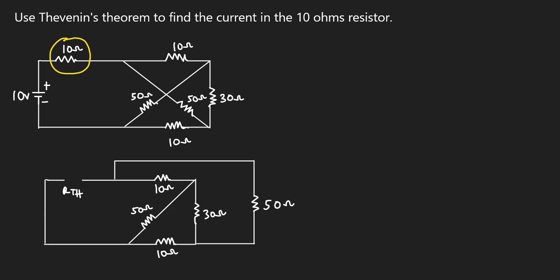Hello, welcome to this lesson. In this video you are going to solve a question using the Thevenin theorem to find the current in the 10 ohms resistor circled in yellow. To solve this, the first thing we'll do is find the Thevenin resistance, then the Thevenin voltage, then draw the Thevenin equivalent circuit, and finally find the current through the 10 ohms resistor.